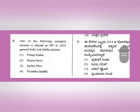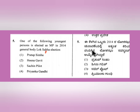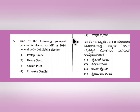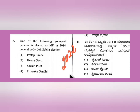Question 5: One of the following is the youngest person elected as MP in the 2014 general Lok Sabha election. The answer is Hina Gavit, who was elected as the youngest Lok Sabha member. Similar questions may be asked about the current President of India - which state she is from, why she was elected. Check these important points related to elections.